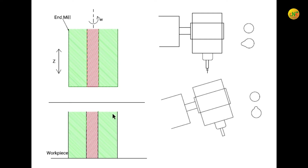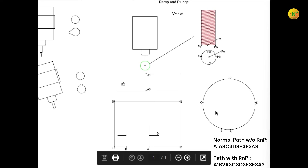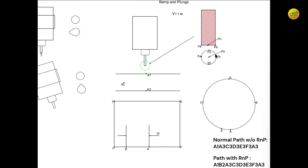So how do we solve this problem? Here, P0 is the center point of the end mill and Pa, Pb, Pc are the peripheral points. As discussed, going straight down forces P0 to remove material, which we don't want. So instead, we try to remove as much material as possible with the periphery of the tool, not with the center point.